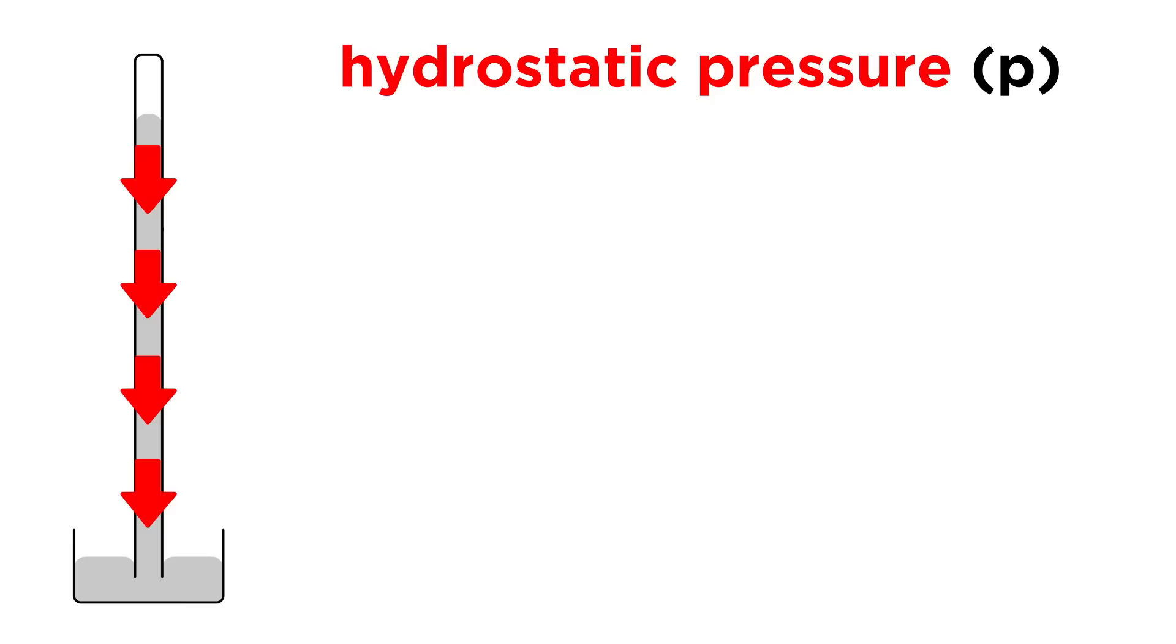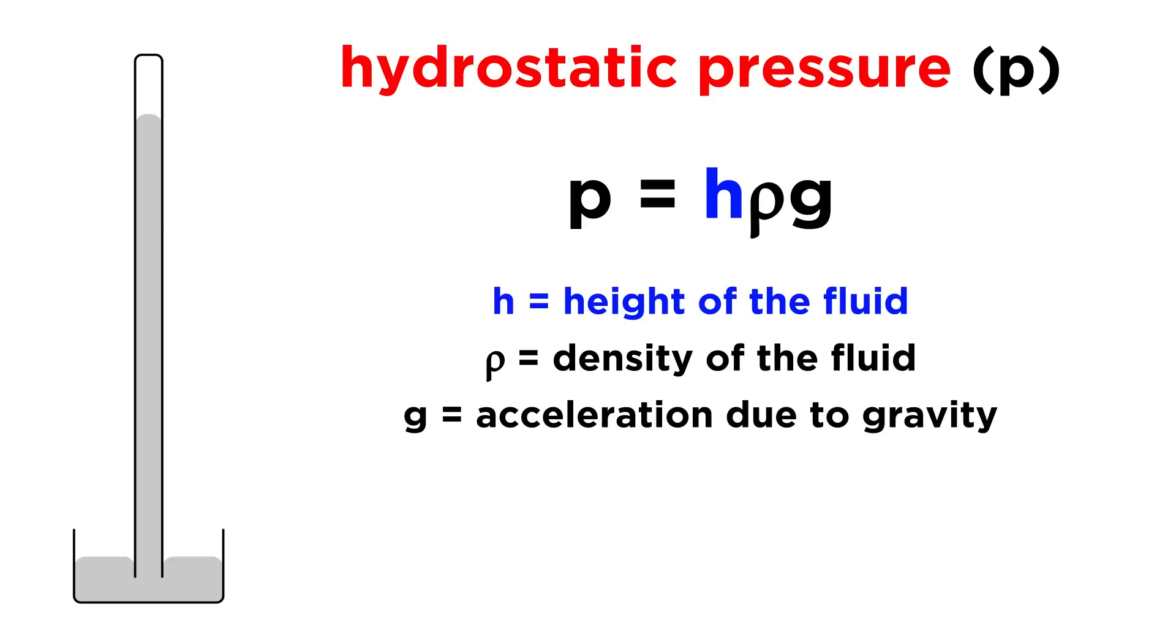The pressure exerted by a fluid due to gravity is called hydrostatic pressure, which is represented by P, and is equal to the height of the fluid, times the density of the fluid, times g, the acceleration due to gravity.